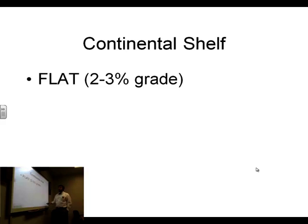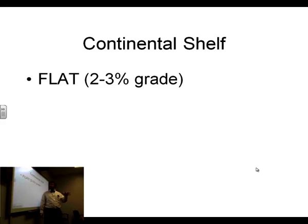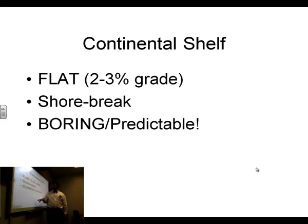Continental shelves are relatively flat — a two to three percent grade. Just to give you an idea of that steepness, most really intense parking lots are under two percent, like one to one and a half percent. They usually start with a shore break where the shore breaks, and then they go out in a very predictable manner.